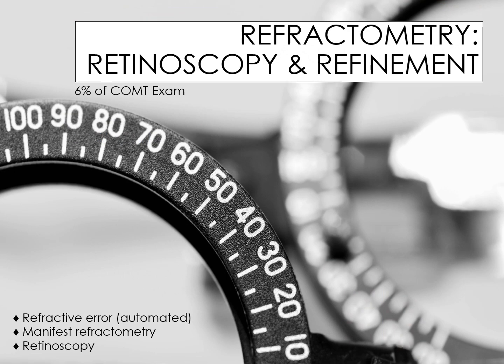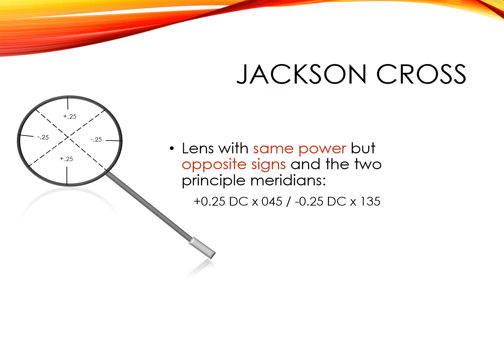Questions regarding retinoscopy and refinement will comprise approximately 6% of your COMT exam. The Jackson cross cylinder is sometimes known as the Stokes lens, a flip cylinder, or simply cross cylinder. It is a lens with the same power but opposite signs in the two principal meridians. The lens is mounted so that by turning a knob, it can be flipped around its principal meridians. Usually, the negative axis powered meridian is marked with red and the positive power meridian with white.